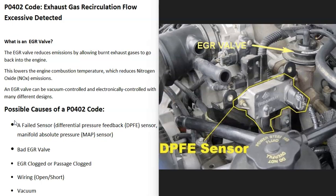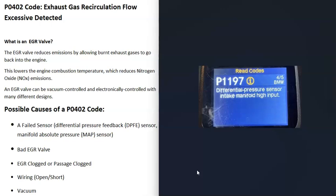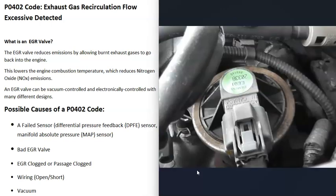If the differential pressure sensor or another sensor goes bad, that's going to cause issues because the computer is getting the wrong information. Usually if one of these sensors fails, you're going to get another code — although sometimes it can fail without triggering a code. If you do get another code, you can go test that sensor to confirm it's working correctly.